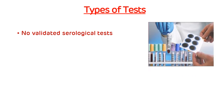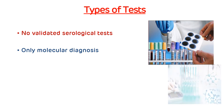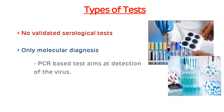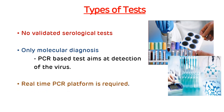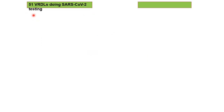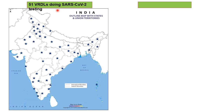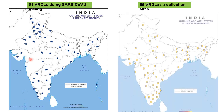No validated serological tests are available for COVID-19; only molecular diagnosis is available for detection of the virus. This is done with the help of polymerase chain reaction and a real-time PCR platform. A total of 51 VRDLs conducting testing for COVID-19 are available across India. In Gujarat, there are two centers: BJ Medical College, Ahmedabad, and MPSHA Medical College, Jamnagar. There are also a total of 56 VRDLs as collection sites.